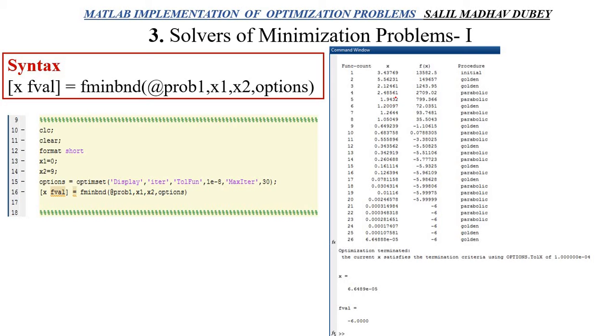I want to define options. My whole function is the same. After x2 I will write options equals optimset bracket open, display, which is to display how the optimization has taken place, how many iterations happened. ITER for iterations. Then tolfun, which is actually the minimum tolerance value. If you have studied optimization in your studies, you know that when we move from one iteration to another iteration, we check the difference in values to decide stopping criteria. That stopping criteria is called tolerance. In MATLAB, that syntax is called tolfun value. Here I have kept the tolerance function value as 1 into 10 to the power minus 8. And then maximum iteration, I have kept maximum iteration at 30.